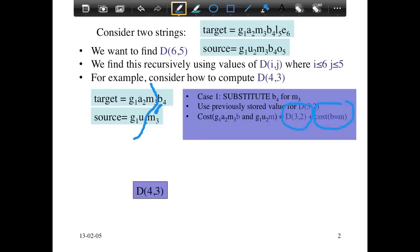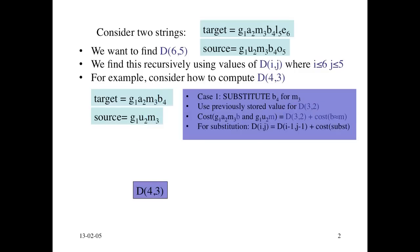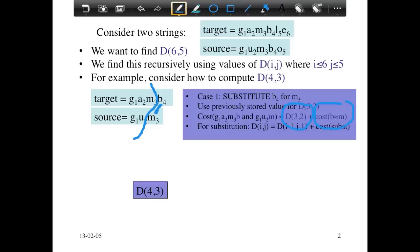In general for substitution, D(i,j) depends on D(i−1, j−1) plus the cost of substitution. In Levenshtein distance, the cost of substitution is two if the characters are different, and zero if the characters are the same — because there's no cost for aligning the same character in the source to the same character in the target. That's the first case.